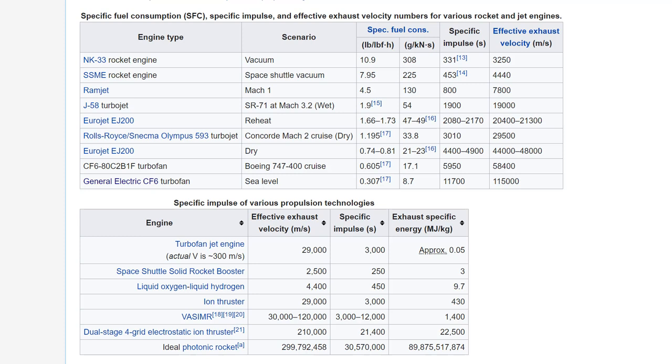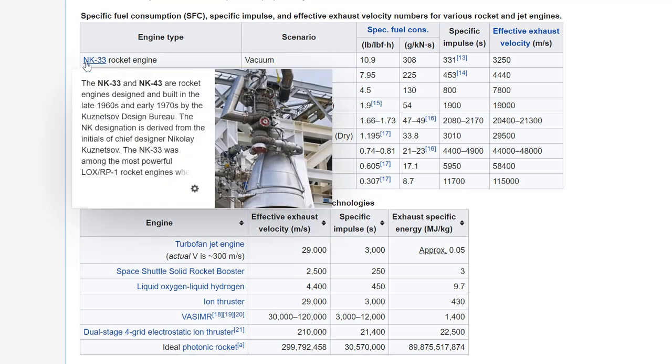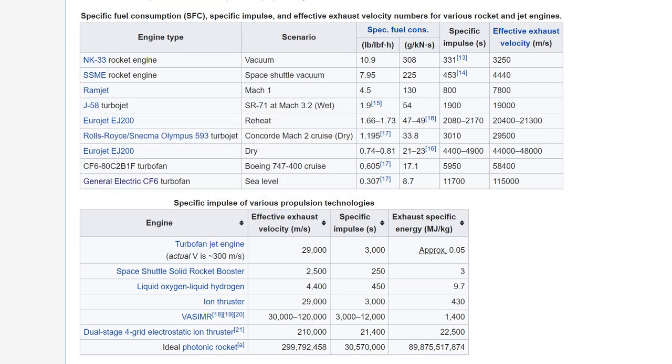So let's see if we can find some actual values for these types of engines. Here we are back at this Wikipedia article. I'm a little farther down in it now and here's a table showing specific impulses for different kinds of engines. The two rocket engines up here are both chemical rockets. This NK-33, see a picture of it right there, is a liquid oxygen RP-1 engine. This is akin to the Rocketdyne F-1 that was on the Saturn V first stage. LOX is liquid oxygen, and RP-1 is basically just jacked up kerosene, a very refined kerosene. The other thing to notice is the scenario. It says vacuum.